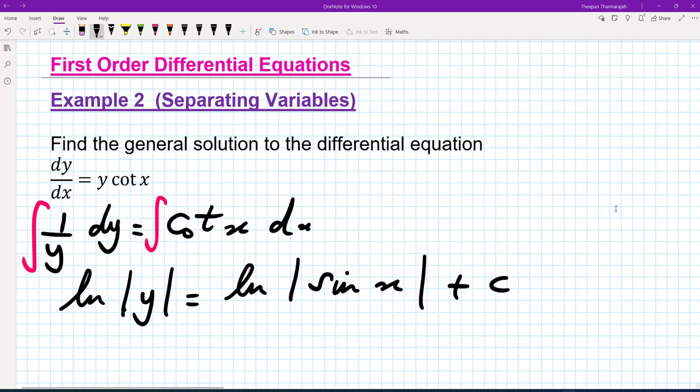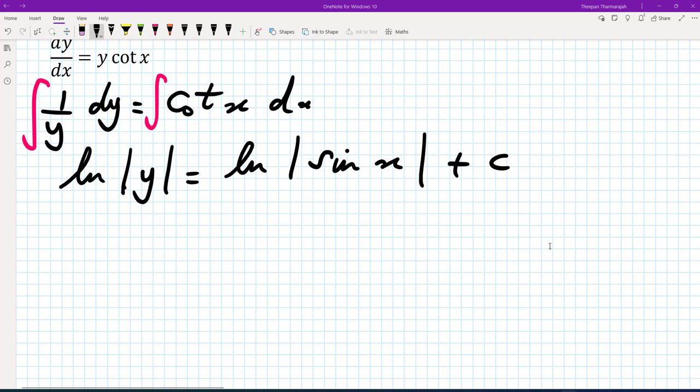And what we're going to do here is we're going to call the constant c ln k because it's just a general constant. So everything's in terms of the natural log. So we get ln sine x plus ln k.